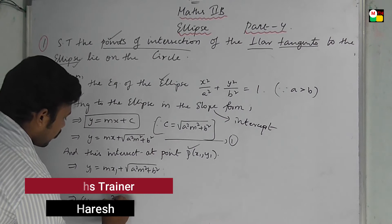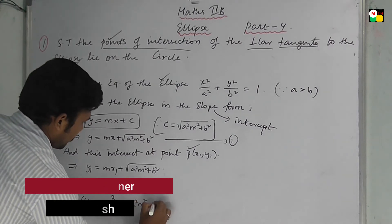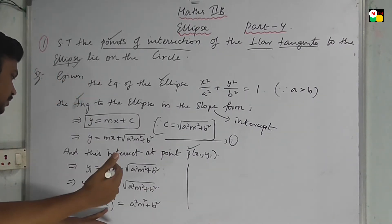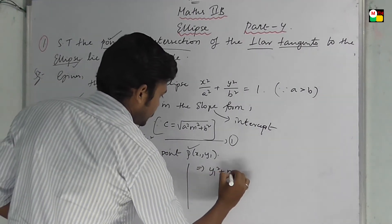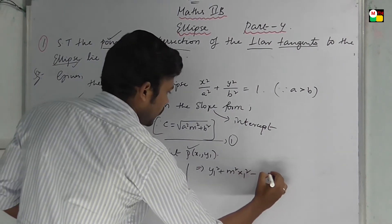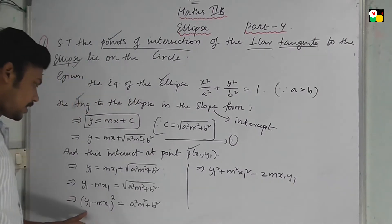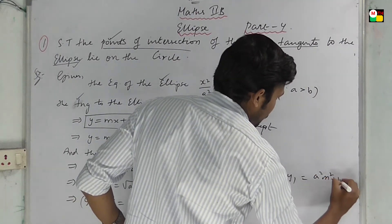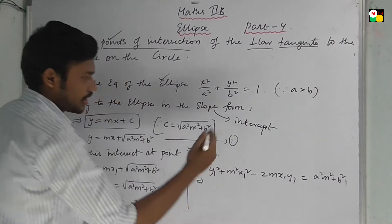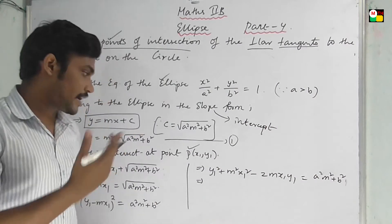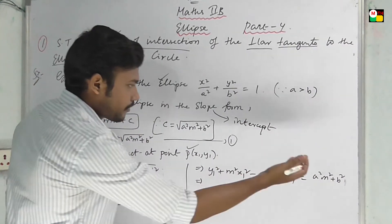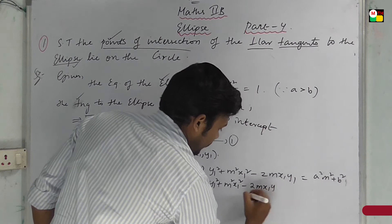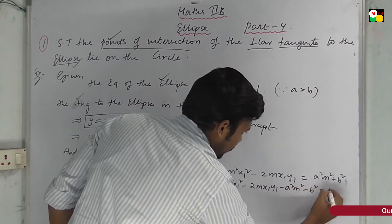Squaring both sides, y1 minus mx1 whole square equal to a squared m squared plus b squared. Expanding using the formula (a minus b) squared equals a squared plus b squared minus 2ab: y1 squared plus m squared x1 squared minus 2mx1y1 equals a squared m squared plus b squared. Moving everything to one side gives y1 squared plus m squared x1 squared minus 2mx1y1 minus a squared m squared minus b squared equal to 0.